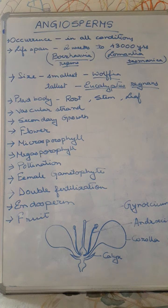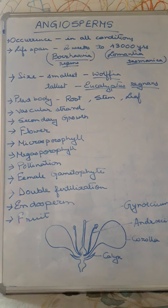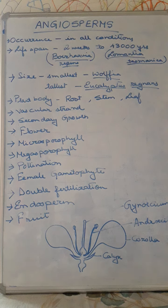In angiosperms, we get monocot and dicot plants. Monocot means one cotyledon is present in the seed or embryo. When two cotyledons are present, it is known as a dicot plant. Monocots do not possess cambium tissue and therefore cannot show secondary growth, whereas dicots possess cambium and therefore show secondary growth.